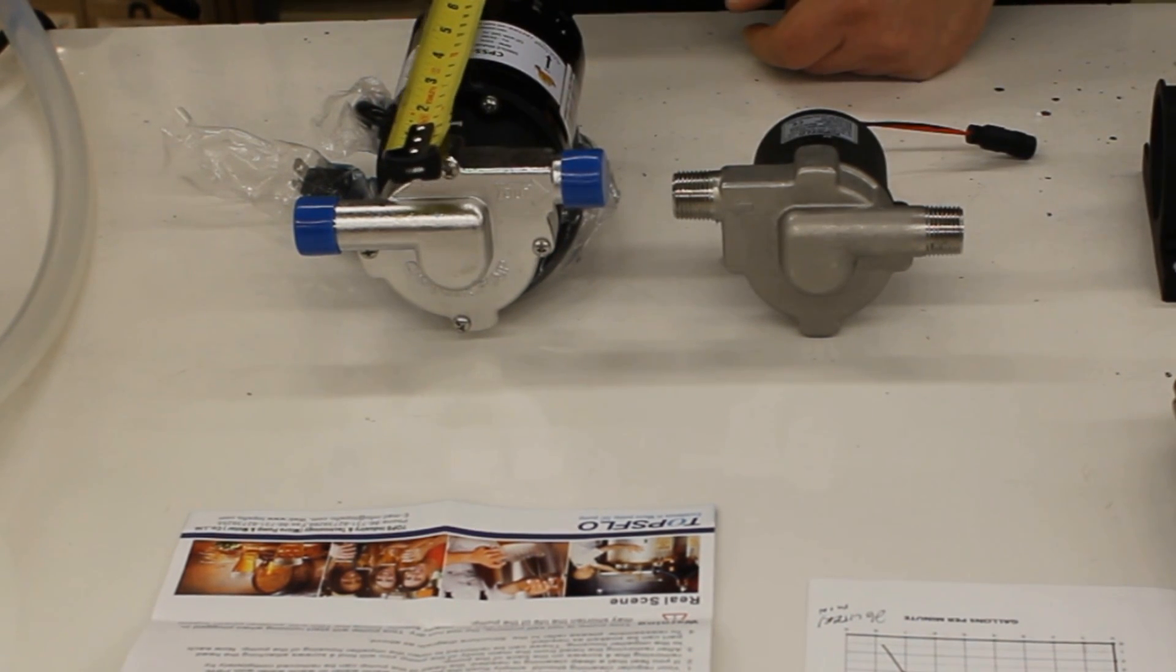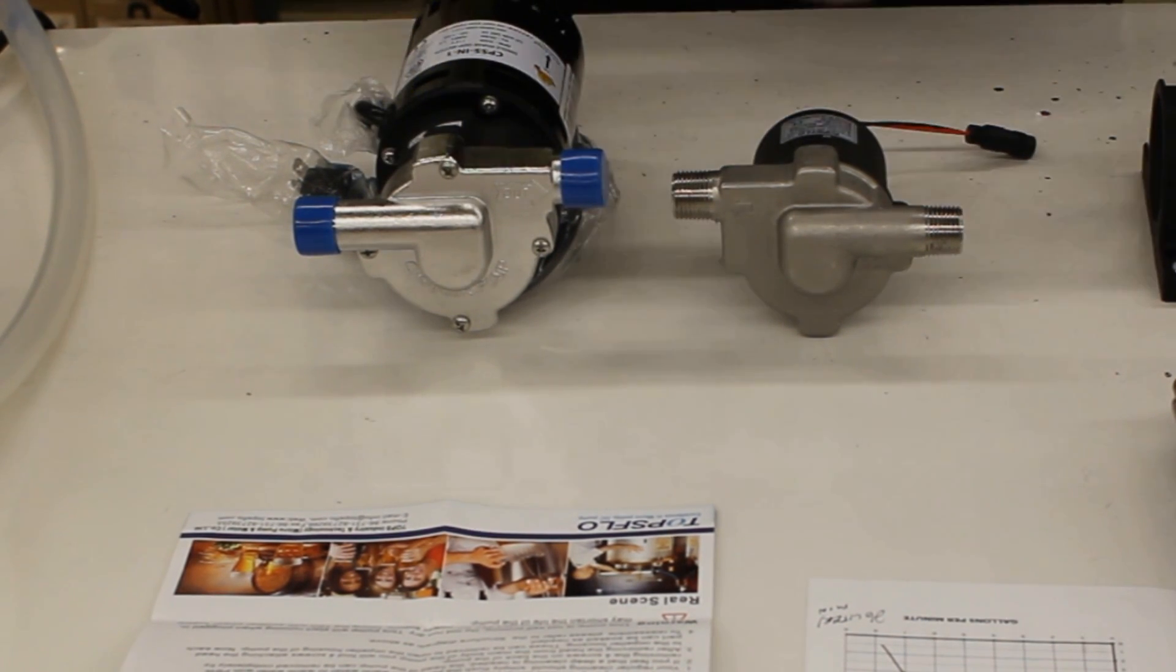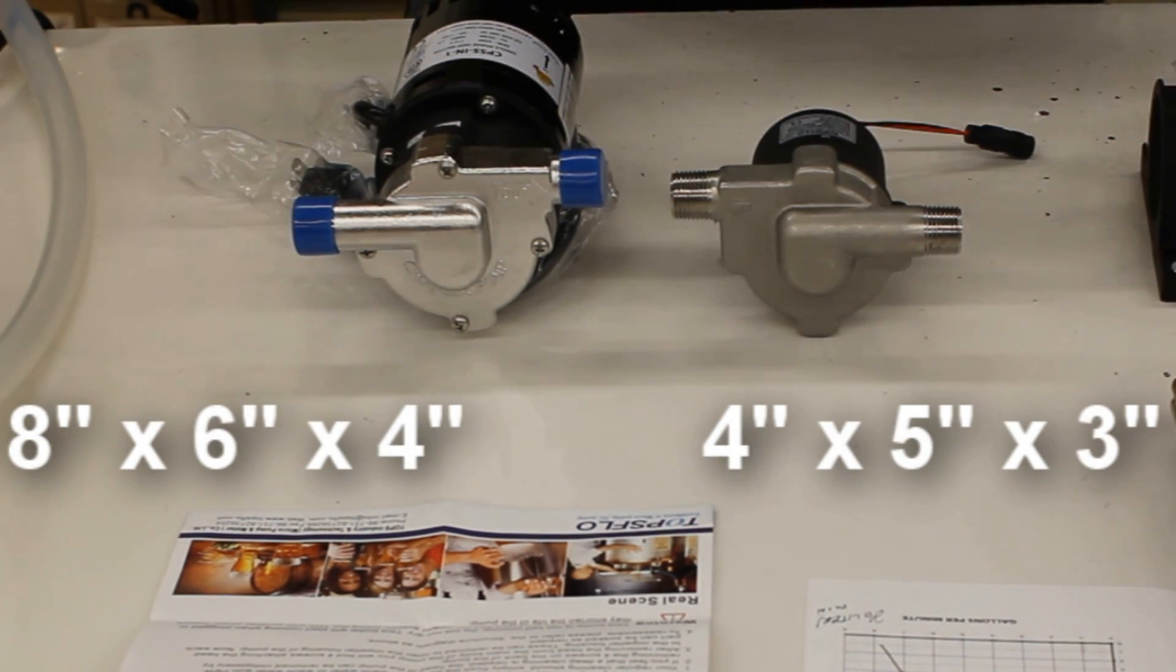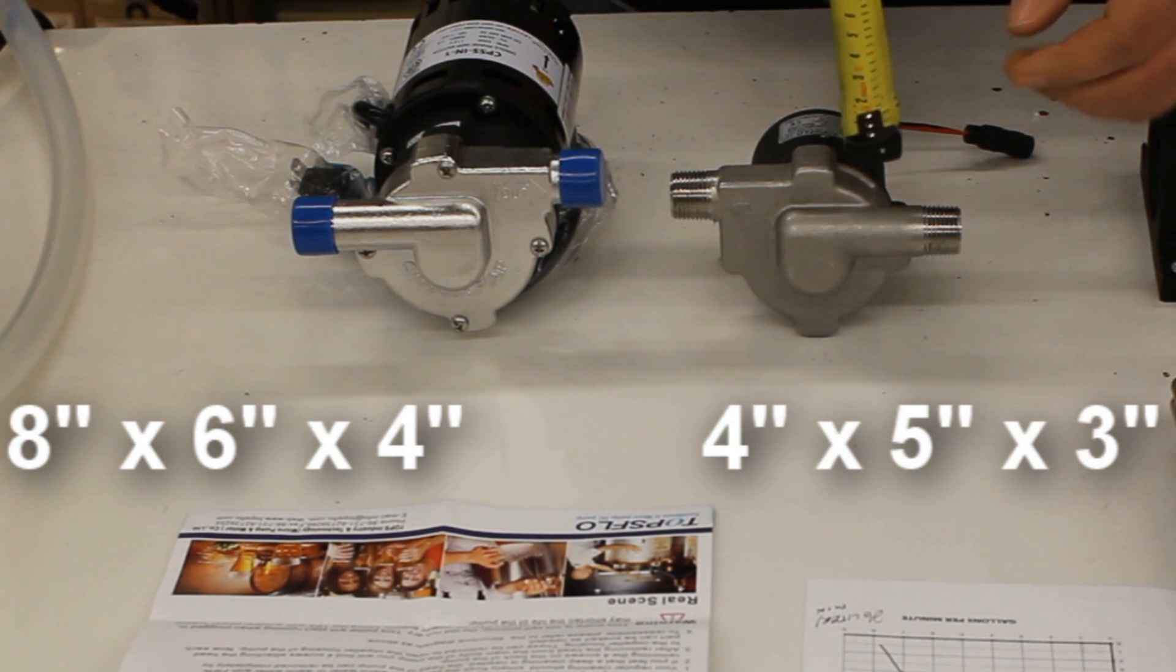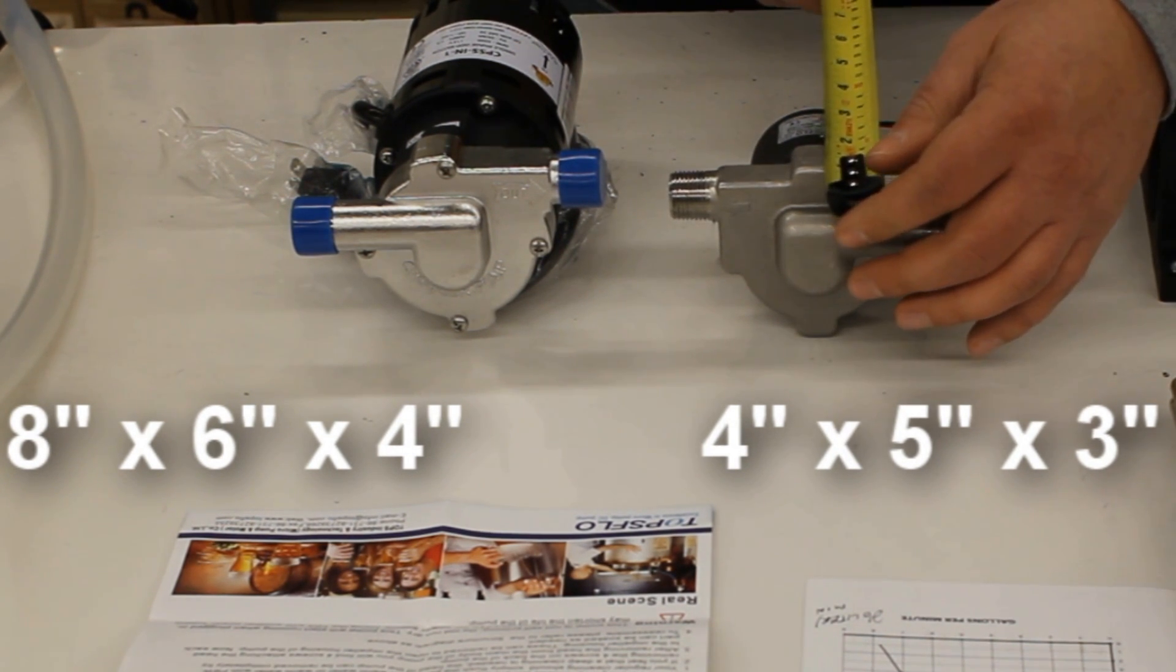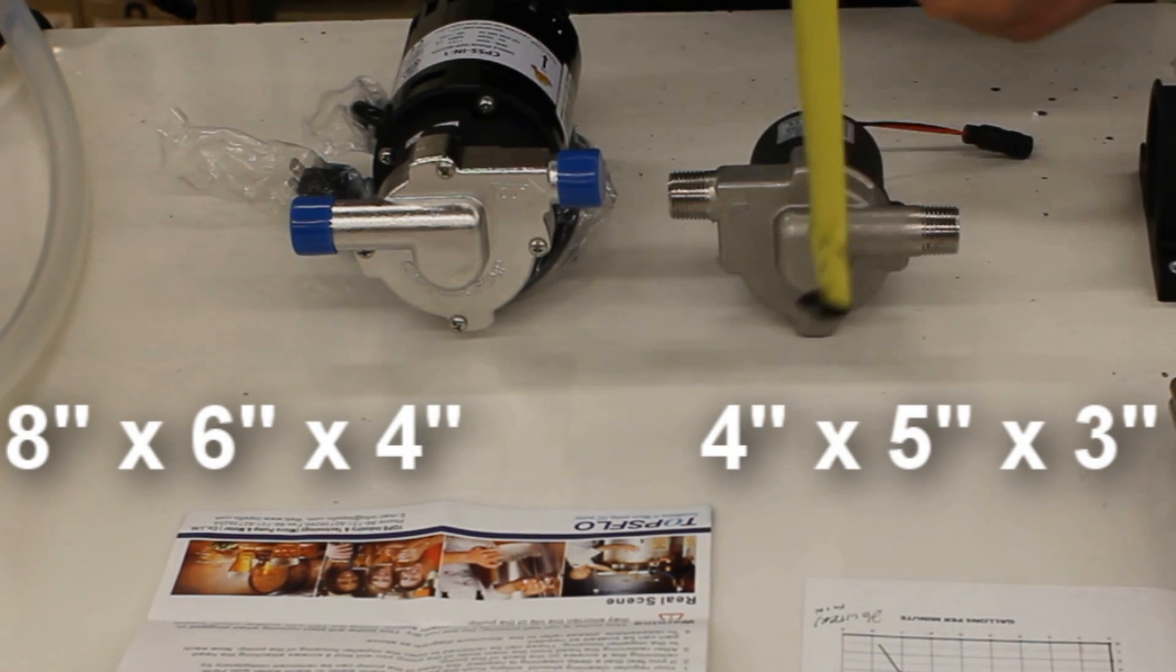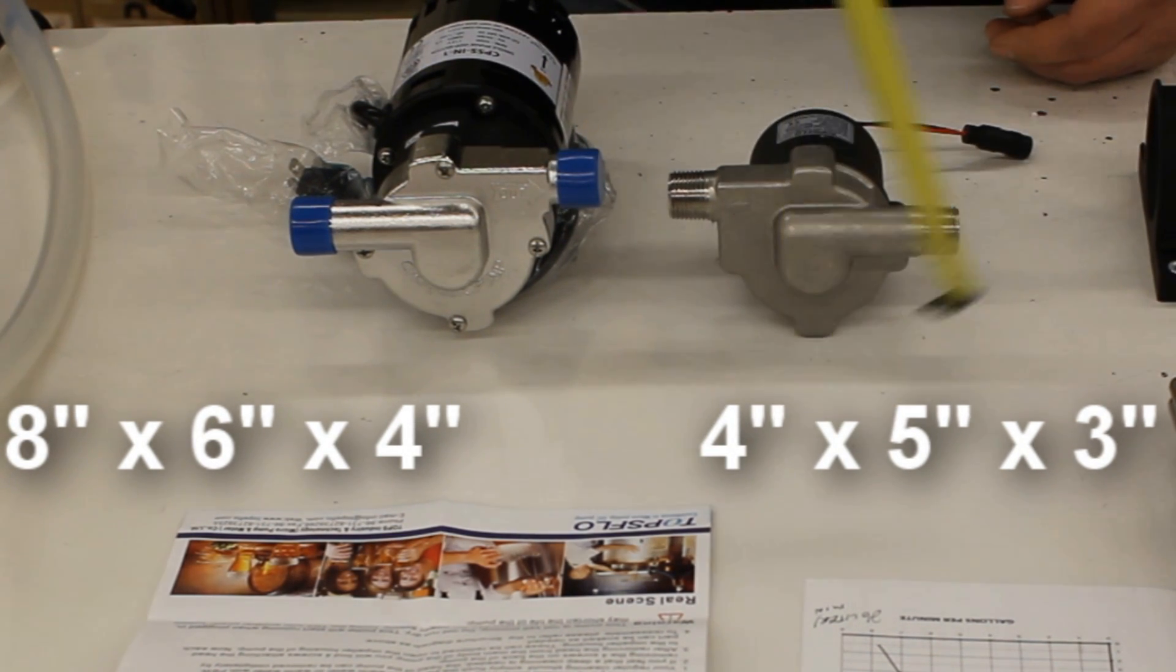The Chugger is about eight inches long, about six inches wide, and about four inches tall. The TopsFlo is about four inches long, about five inches wide, and about two and a half inches tall.